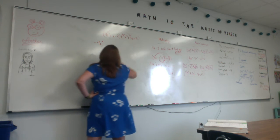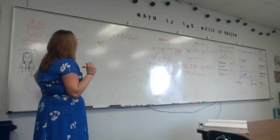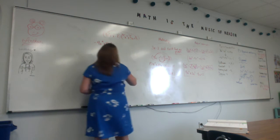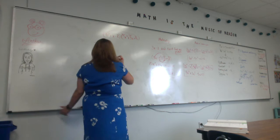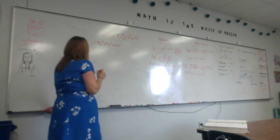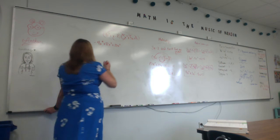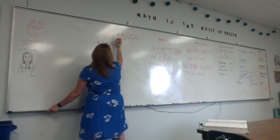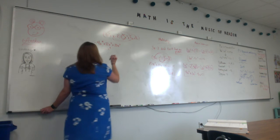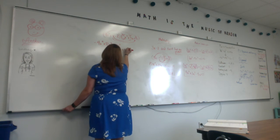What is 4x squared times 3x? 12x cubed. What is 4x squared times 5? 20x squared. What is x times negative x squared? Negative x cubed — line it up under the cube term. What is x times 3x? 3x squared — line it up under the x squared. What is x times 5? 5x.